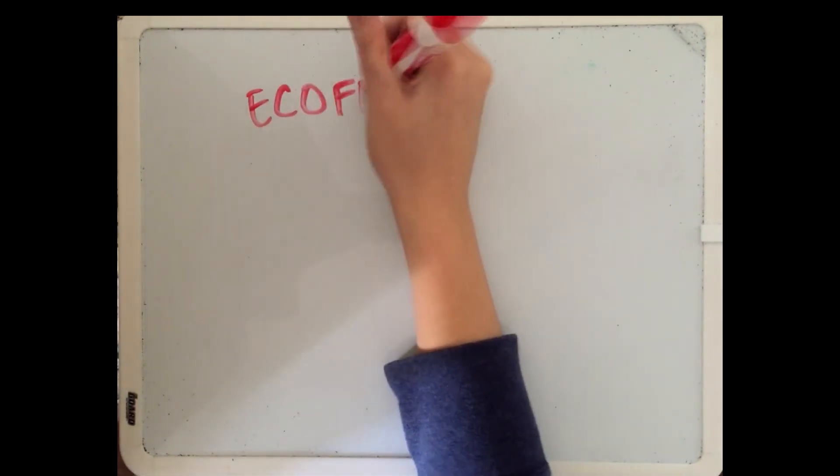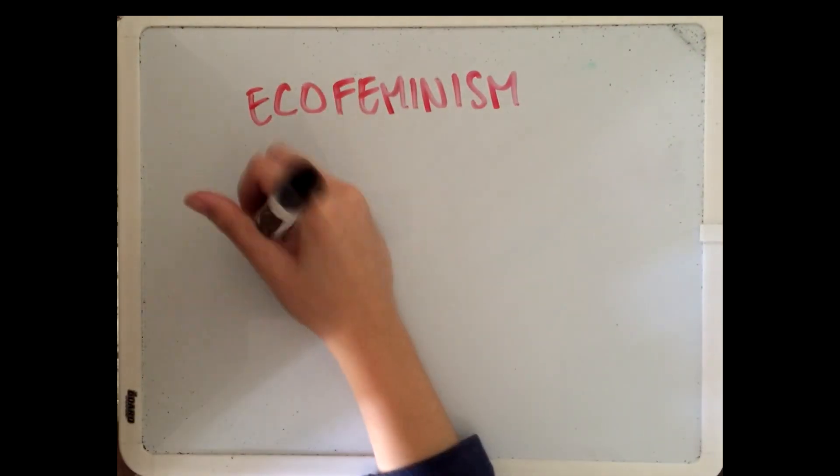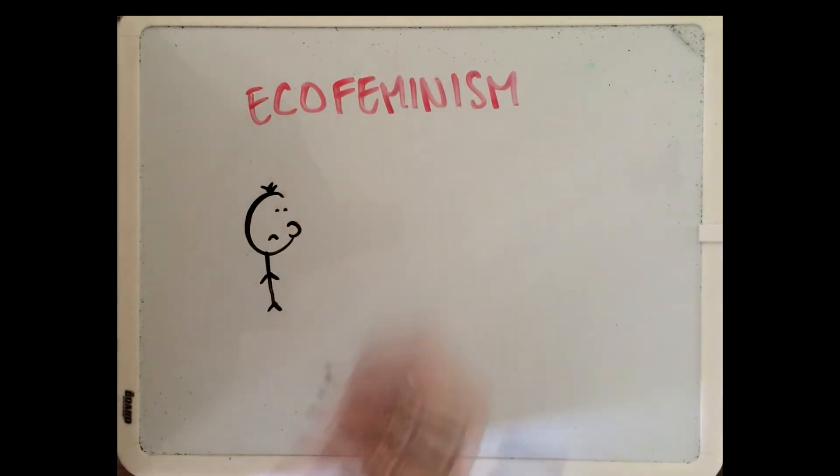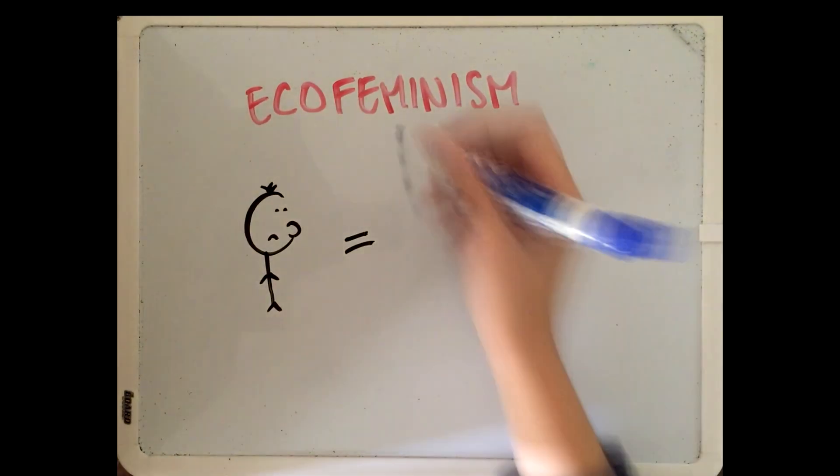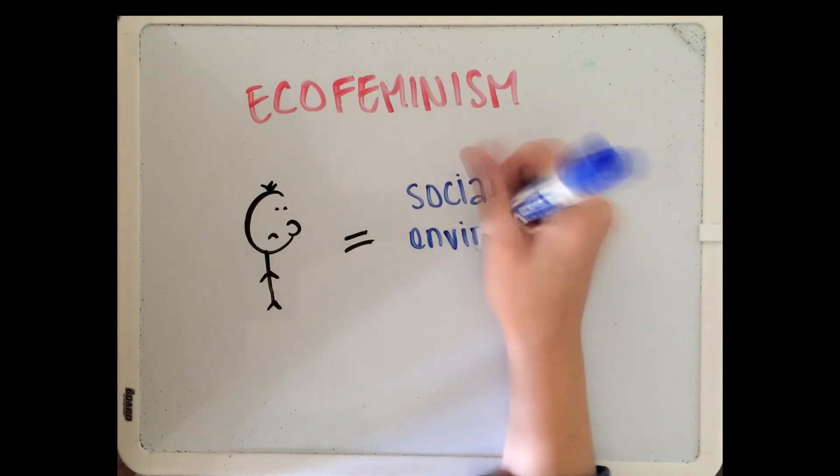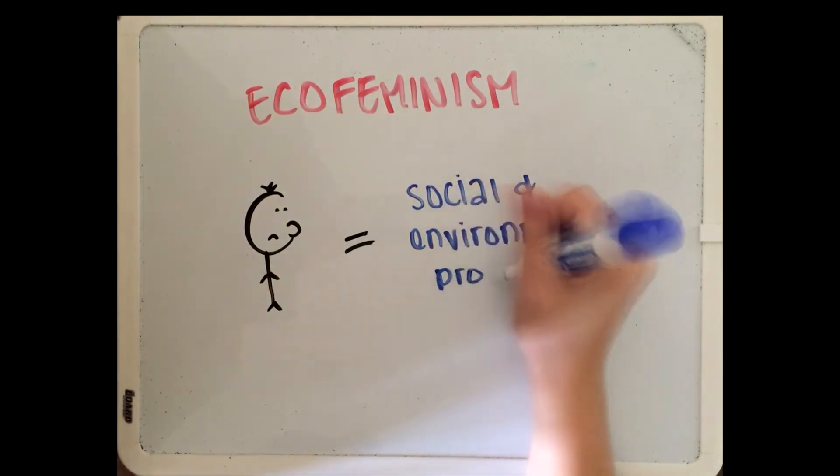One of the contributing factors that led to the environmental justice movement was ecological feminism, or ecofeminism. Ecofeminism argues that the male-dominated structure of society is the root cause of both social and environmental problems.